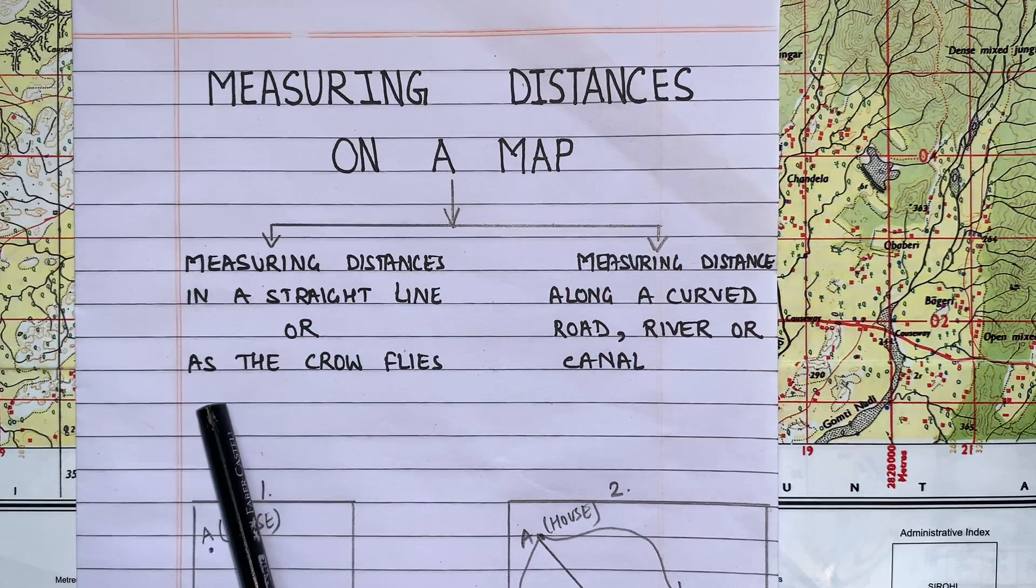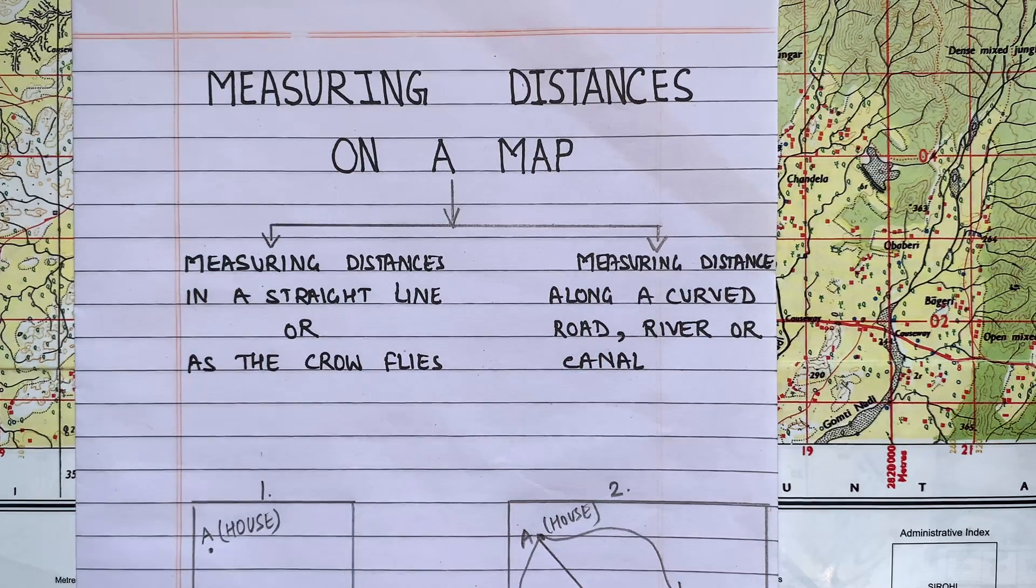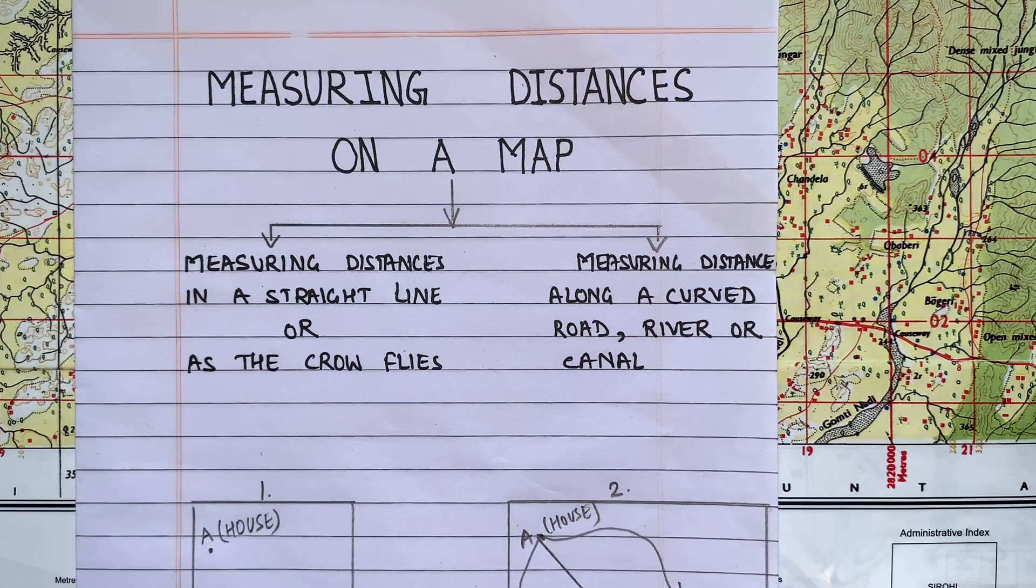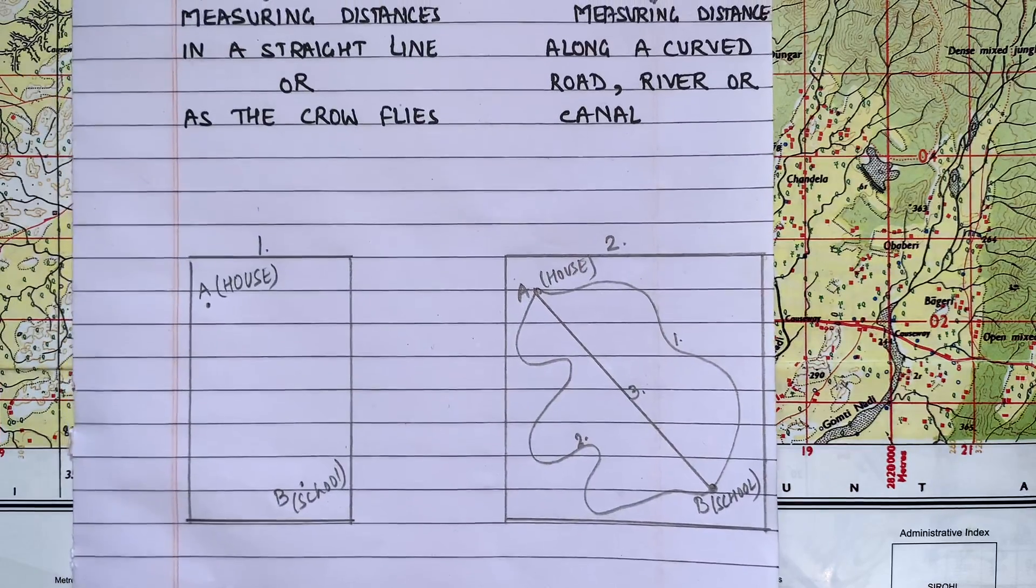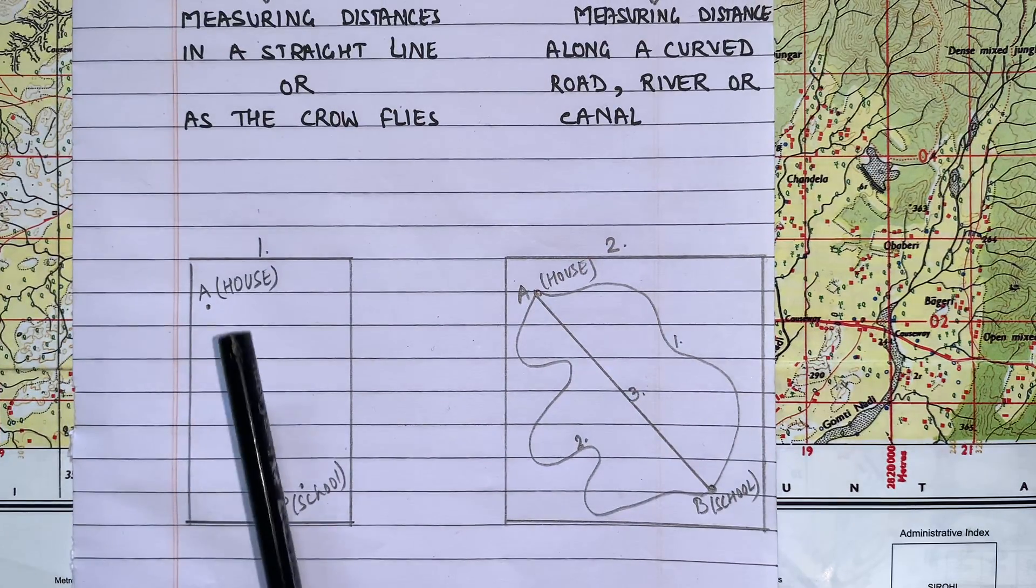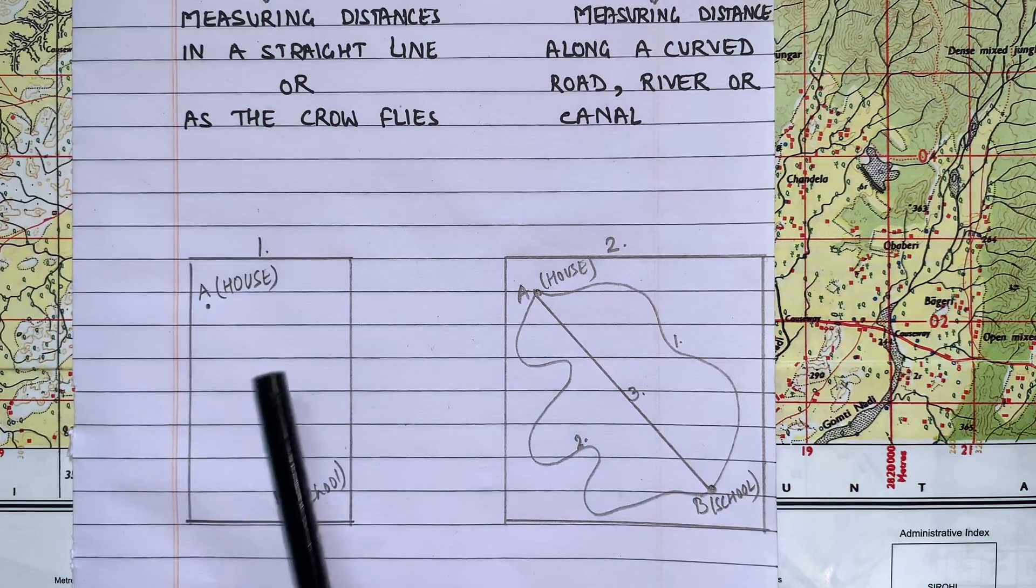Today in this class I will teach you the first method, measuring distance in a straight line. Now the phrase as the crow flies refers to the shortest distance between two given points. I have drawn two boxes for you to explain this.